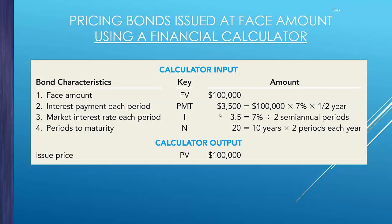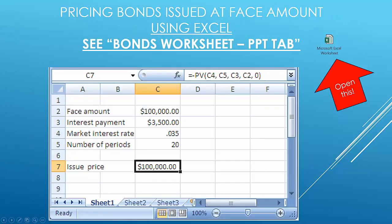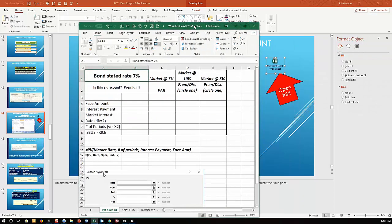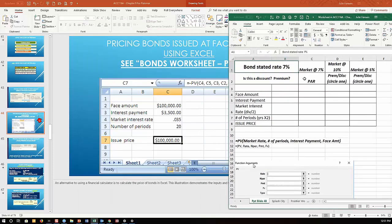You can figure out a bond's issue price using a financial calculator, present value tables, or Excel. I've created a spreadsheet for this. Note: you cannot be in presentation mode when opening the spreadsheet. It looks similar to what I'm showing on screen, so let's fill it out together.